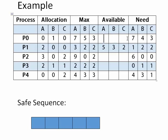Our safe sequence starts with P1. Now with available resources 5 3 2, we check P2. P2 needs 6 0 0 but we have only 5 3 2, so we cannot fulfill P2's request. We move to P3. P3 requires 0 1 1 resources of type A, B, C and we have 5 3 2, so we can clearly fulfill this request.